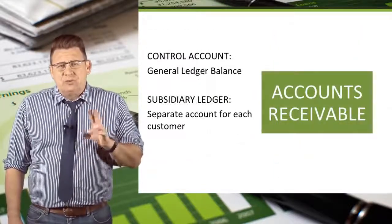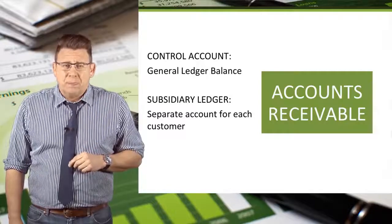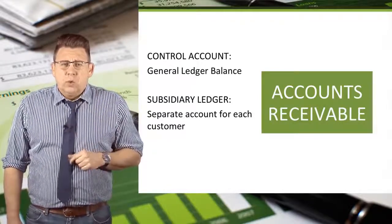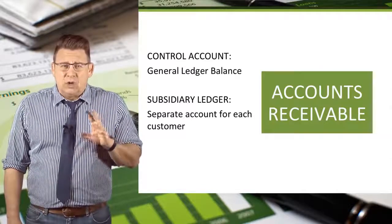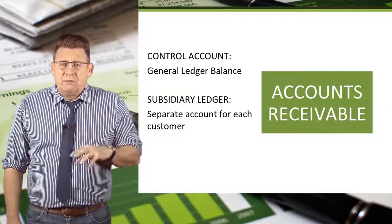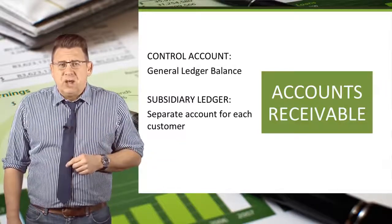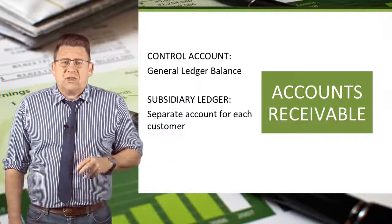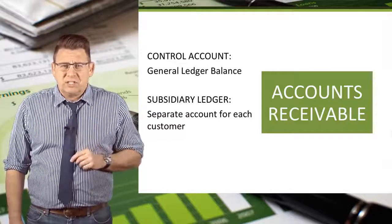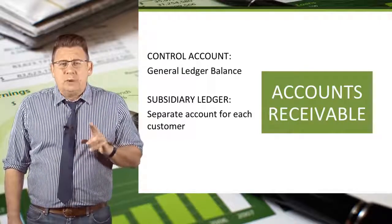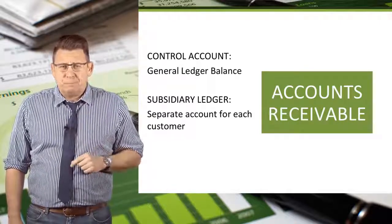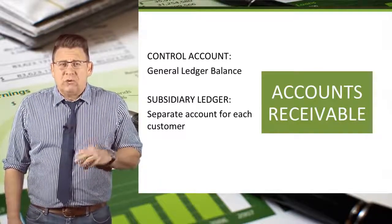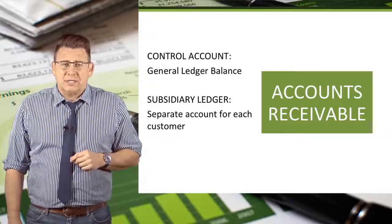Most companies have two records of accounts receivable. They have the general ledger accounts receivable account, which presents the amount owed to a company from all of its customers — often known as a control account. They also have subsidiary accounts that track the amount owed by each individual customer. The total of all the subsidiary accounts needs to equal the general ledger control account balance.